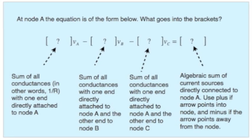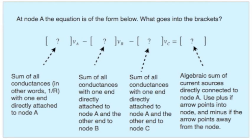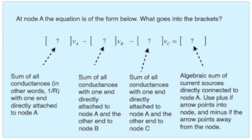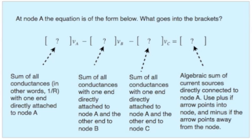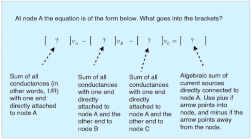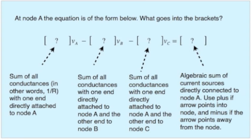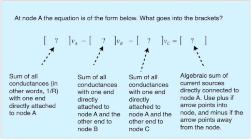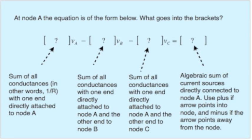Now in this algorithm, we're going to write equations with V A, V B, and V C on the left side of the equation. And at node A, notice that the quantity in front of V sub A will be positive, whereas the quantity in front of V B and V C will be negative. What goes inside those brackets?